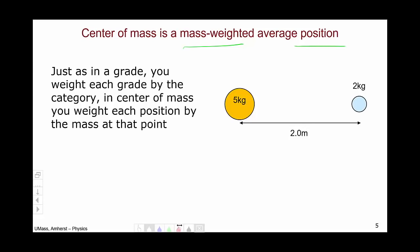The first step is to establish a coordinate system. When we're talking about positions, I need a coordinate system. So I am going to establish the positive x direction to be that way. Now I can go and calculate the mass weighted average.